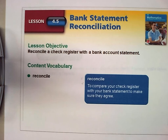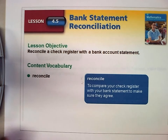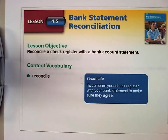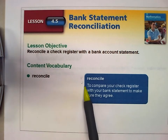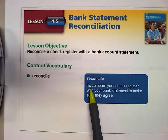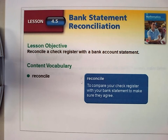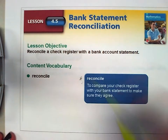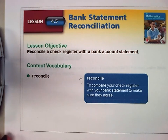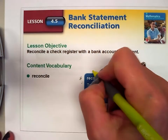Welcome back. Today we're going to look at lesson 4-5, which is our bank statement reconciliation. To reconcile means to compare your check register with your bank statement to make sure that they agree. You might not have ever heard it actually being called 'reconcile' before.